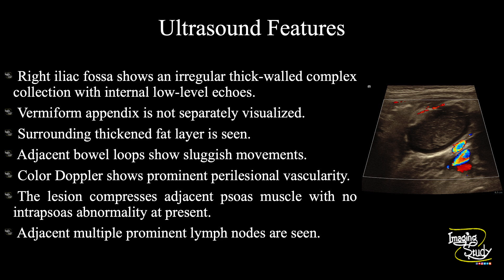In summary, the right iliac fossa shows an irregular thick-walled complex collection with internal low-level echoes. The vermiform appendix is not separately visualized. Surrounding fat plane thickening is seen. The adjacent bowel loops show sluggish movements. Color Doppler shows prominent perilesional vascularity. The lesion compresses the adjacent psoas muscle with no intra-psoas abnormality at present. Multiple prominent adjacent lymph nodes are seen. These features conclude as a case of right iliac fossa abscess, possibly of appendicular origin.